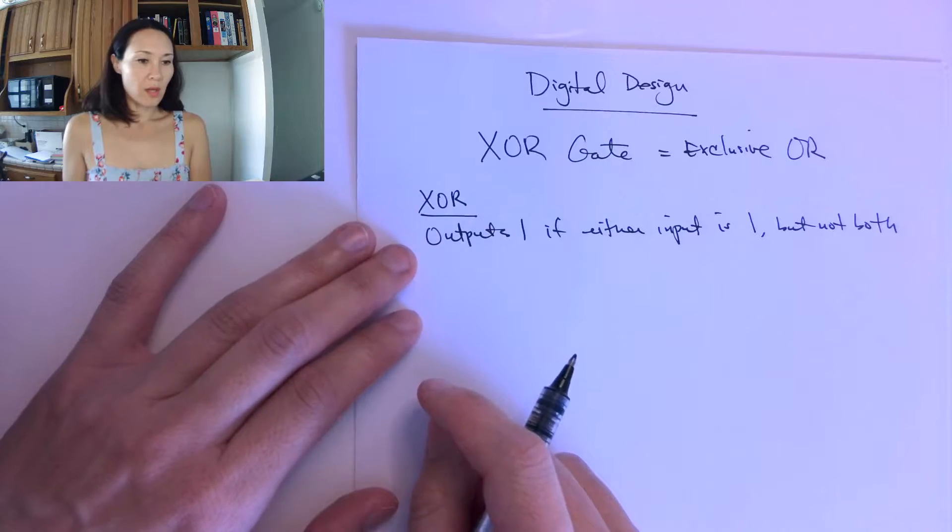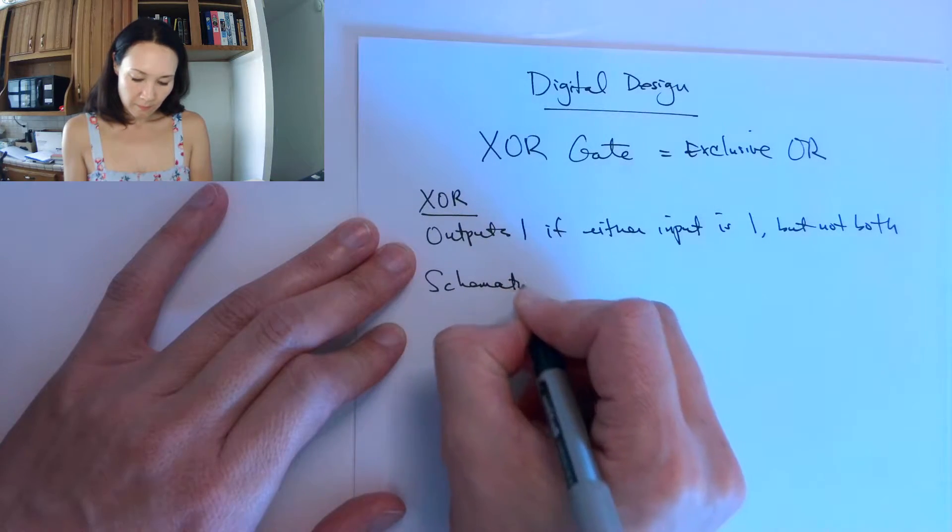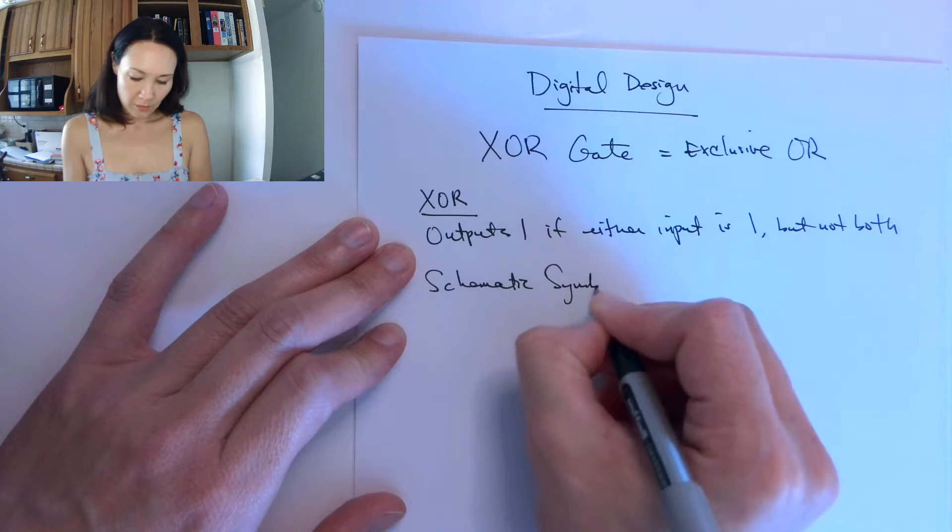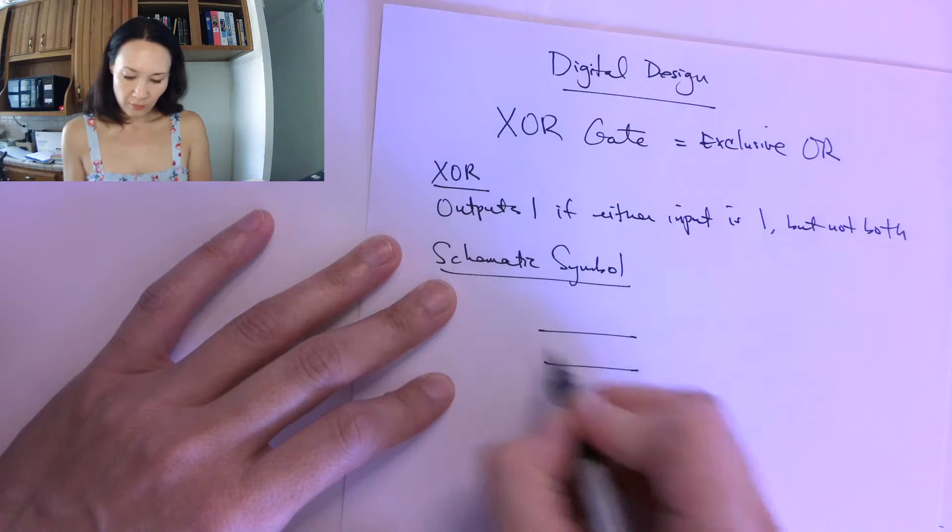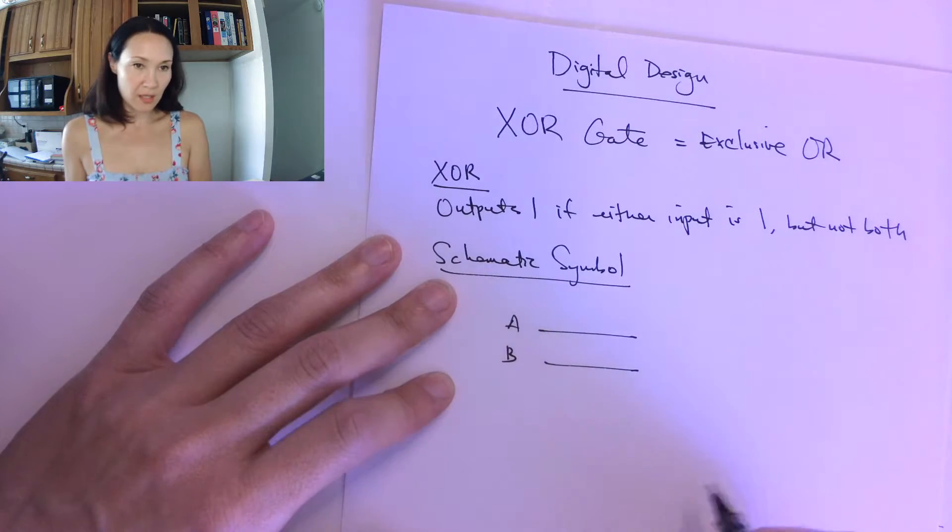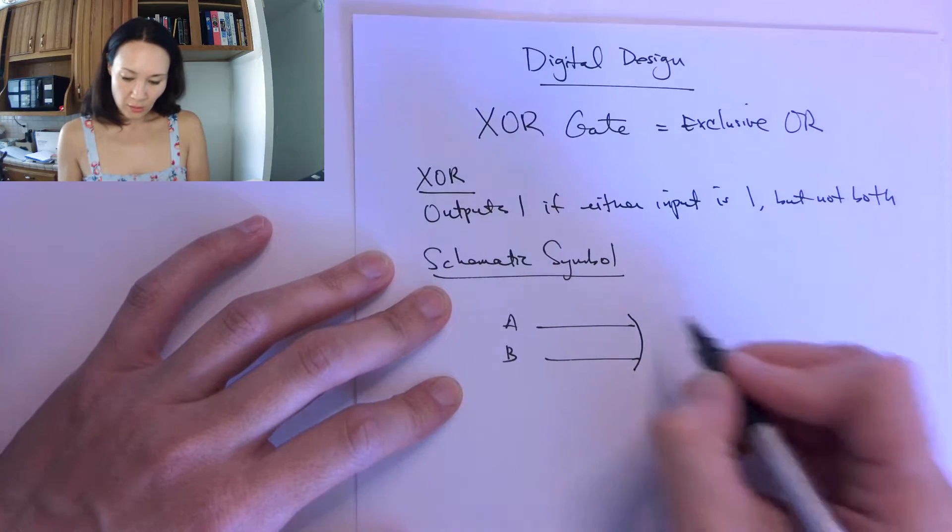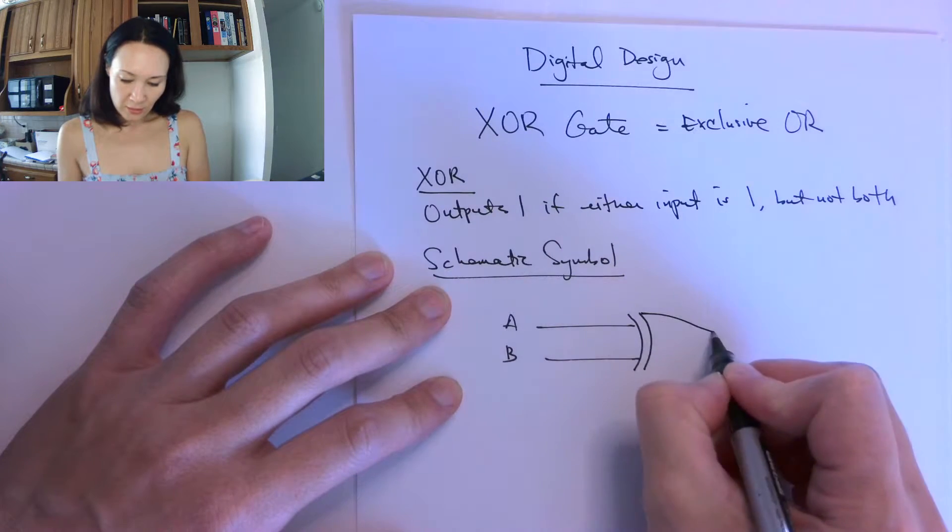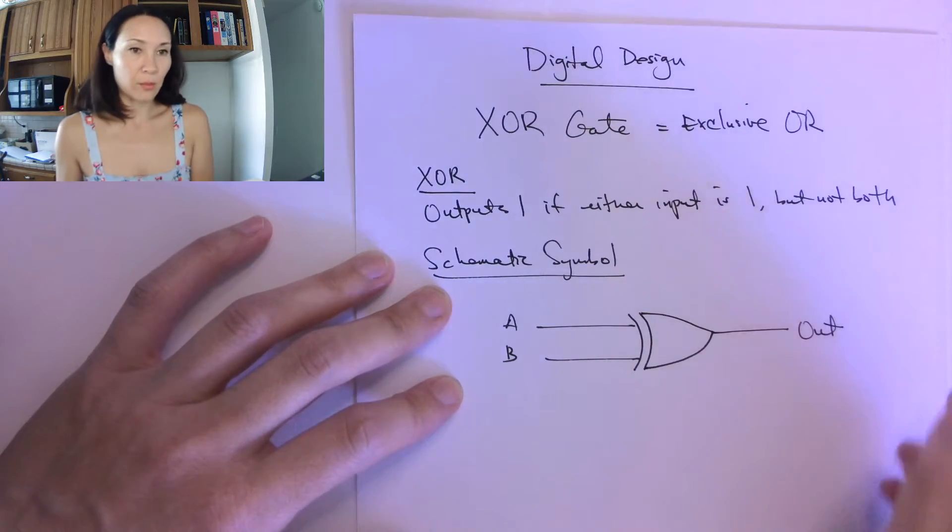The schematic symbol for the XOR gate looks like this. We have our inputs A and B coming in on wires like this, and we've got a line here that's curved, and then it looks just like an OR gate, and this is our output.